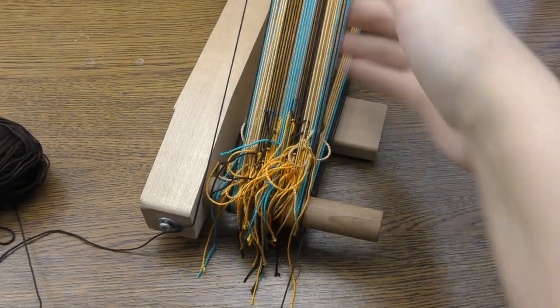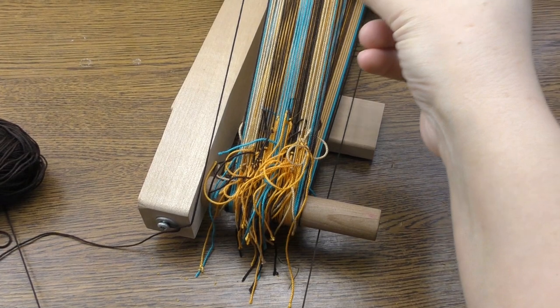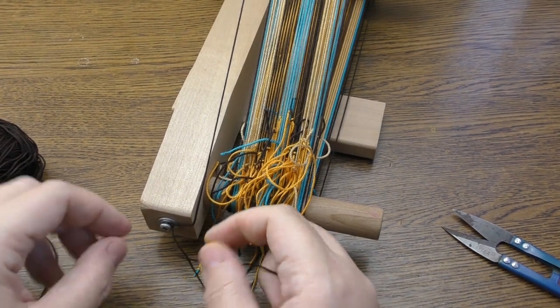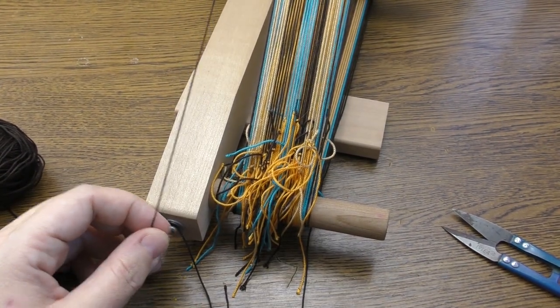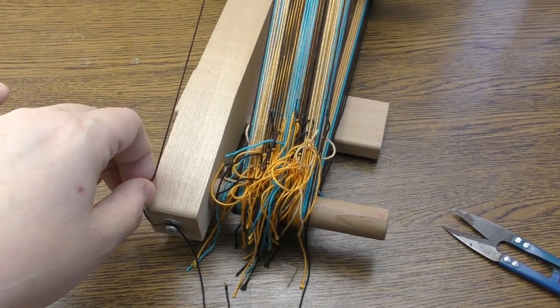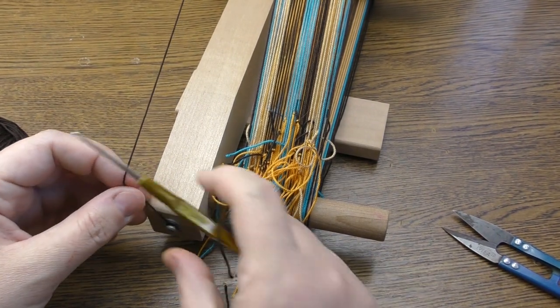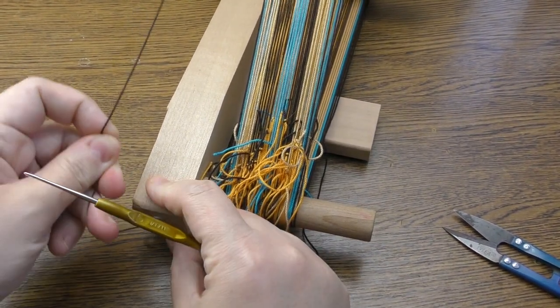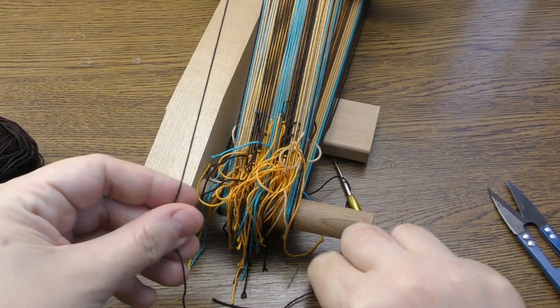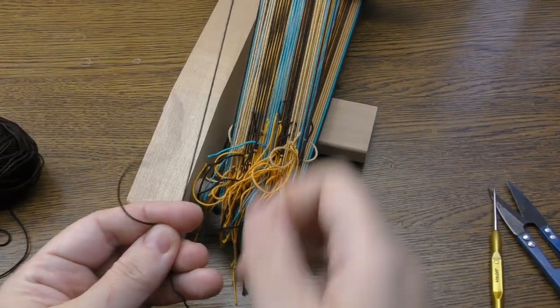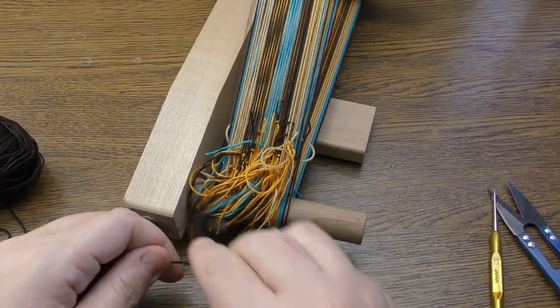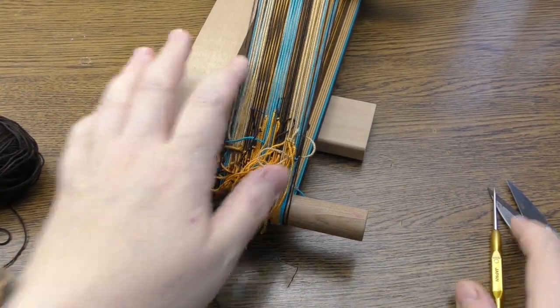So the warping is done, everything is set completely. The last thread goes into the heddle. I chop it off and I untie the knot here. You might need a smaller crochet hook to open up. Sometimes it just doesn't open by itself. You can just cut off the extra as far as you have enough length to tie these two ends together. So I've done this and now I have to move to the heddle part.